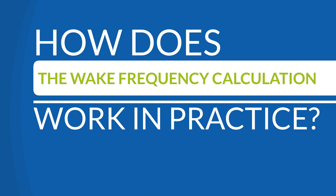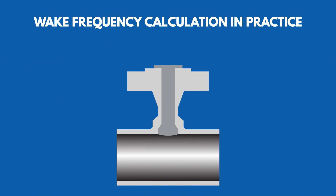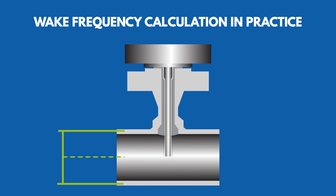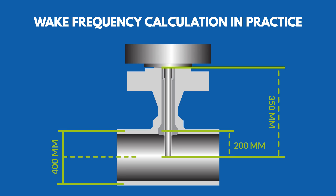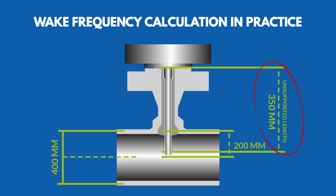So how does the wake frequency calculation work in practice? Let's check an example. An injection DBB valve with probe must be inserted halfway into a 400 mm diameter pipeline. To achieve that the probe tip is in the middle of the pipeline at 200 mm, the probe length must be 350 mm. This overall length is considered as the unsupported length. After the wake frequency calculation, the result shows that the maximum unsupported length is 300 mm instead of the required 350 mm. In this case, a support collar must be inserted to achieve the length required by the end user.